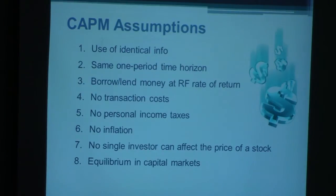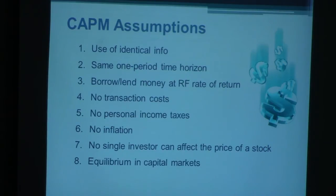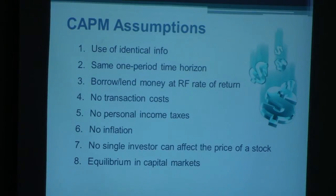Assumption five: no personal income taxes — there is no accounting for income taxes in this formula. Assumption six: no inflation. Assumption seven: no single investor can affect the price of a stock — even though a high-net-worth individual owning 30–40% of a company could affect the price, we assume they cannot. Assumption eight: equilibrium in capital markets — there are enough buyers for sellers and vice versa, and the market would always absorb whatever you want to sell or buy. Most of these assumptions, particularly three through eight, are invalid in reality and are simply included to keep the formula manageable.